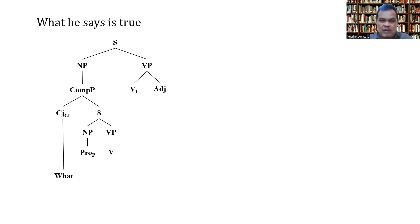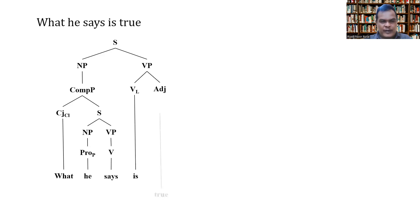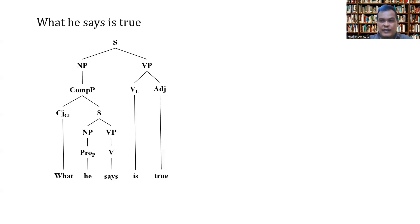What we are going to do is put the given words to each of the labels. We put 'he' as the element of personal pronoun, 'says' as the element of verb, 'is' as the linking verb, and 'true' as the adjective. That's the analysis of the sentence 'what he says is true' using a tree diagram.